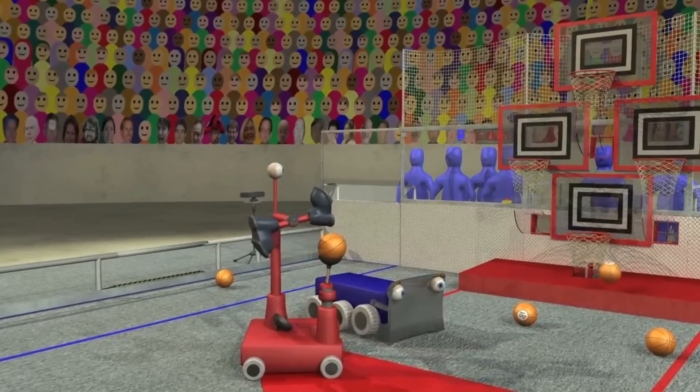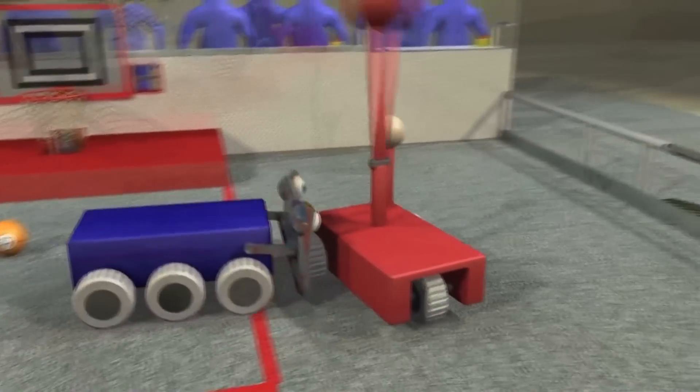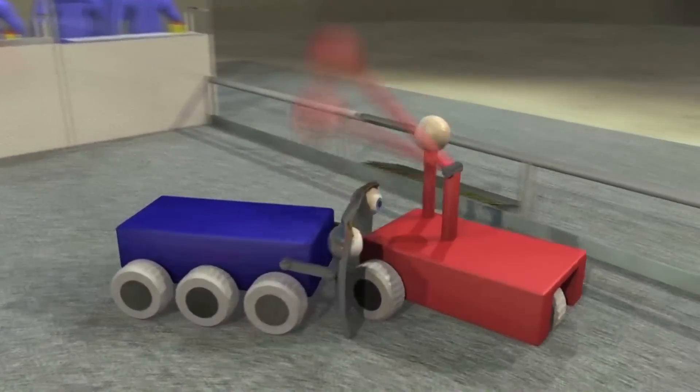Robots shooting from here are protected from interference by their opponents. But robots not touching this safe zone have to deal with defending opponent robots.